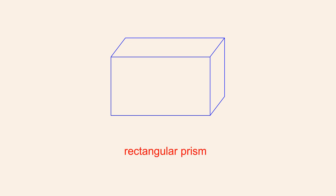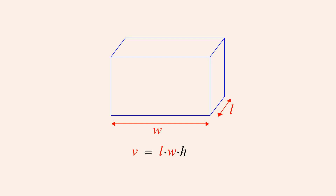Literal equations can involve more than three variables. For example, the formula for calculating the volume of a rectangular box — otherwise known as a rectangular prism — is V equals L times W times H. In this equation there are four variables: V, which represents the volume of the box, and L, W, and H, which represent its length, width, and height.